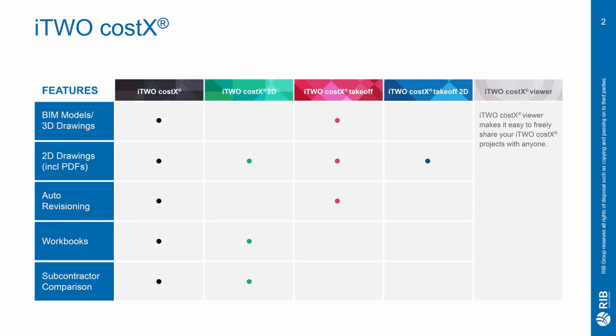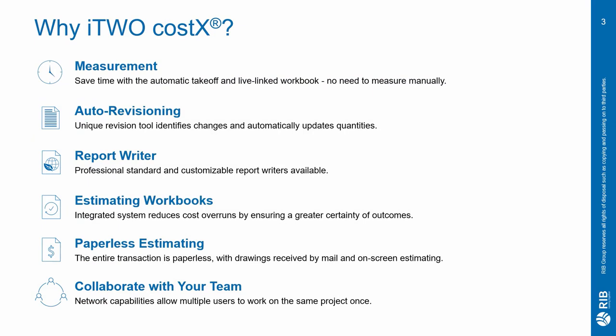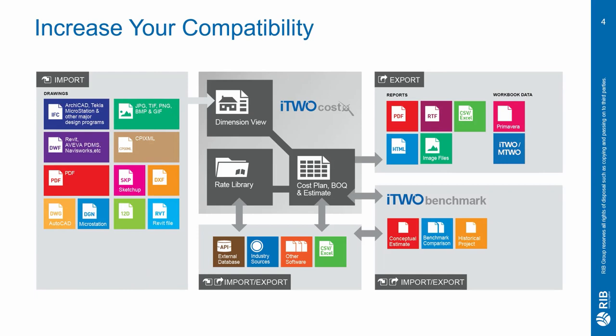i2Costex is available in a variety of feature levels depending on the size of your business or your estimating requirements. It offers quick and easy on-screen takeoff and measurement that can be live linked to comprehensive workbooks to help you save time and eliminate errors. The platform also offers a professional report writer, an auto-revisioning tool, and supports a huge variety of file types to help with compatibility.